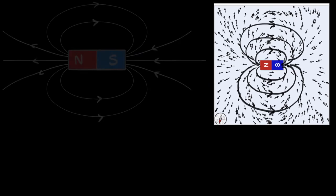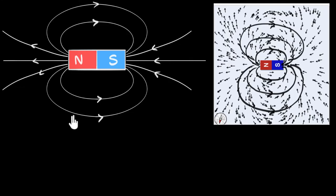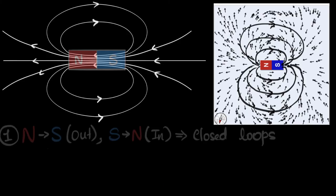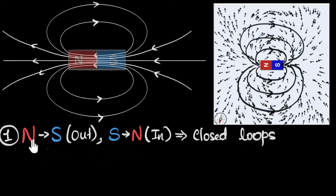Here is a better drawn version of this. Let's list some important properties of magnetic field lines. The first property is that the lines start from the North and end into the South — but this is outside the bar magnet. If we peek inside the magnet, the lines run from South to North, closing the entire loop. So outside the magnet, the field lines run from North to South; inside, they run from South to North. As a result, the magnetic field lines are always closed loops.